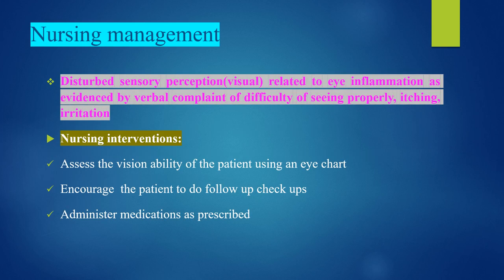Nursing management — Nursing diagnosis 1: Disturbed sensory perception (visual) related to eye inflammation, as evidenced by verbal complaints of difficulty seeing, itching, and irritation. Nursing interventions: Assess vision ability using an eye chart (Snellen chart), encourage the patient to do follow-up check-ups, and administer medications as prescribed.